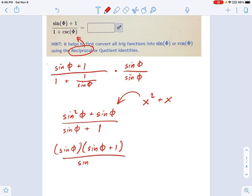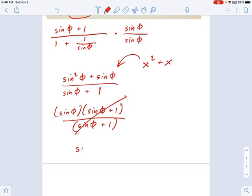And remember, it's all over sine phi plus 1. So now I have two equal factors right there. Those cross out and they simplify to just sine phi. That's my answer.